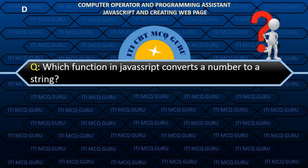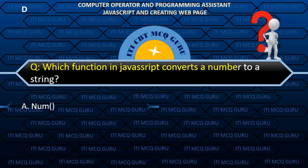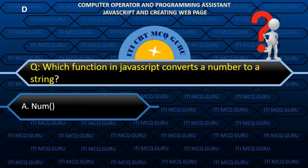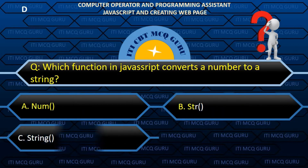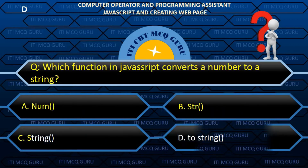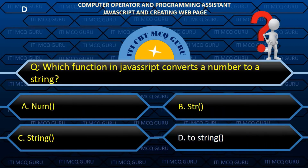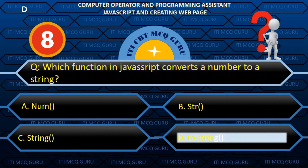Which function in JavaScript converts a number to a string? B. toString().